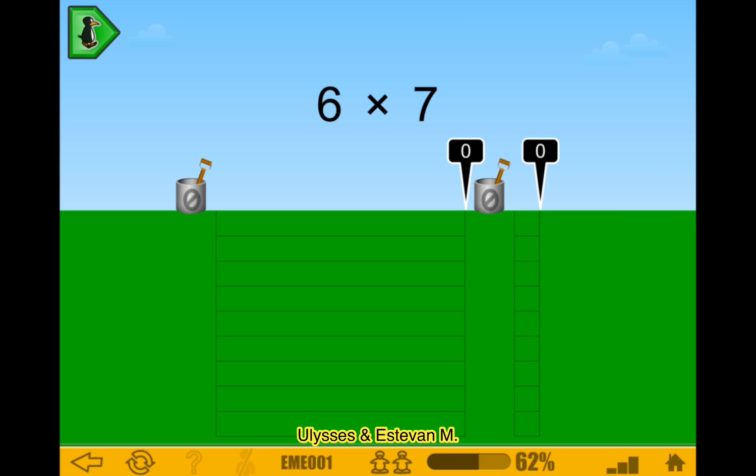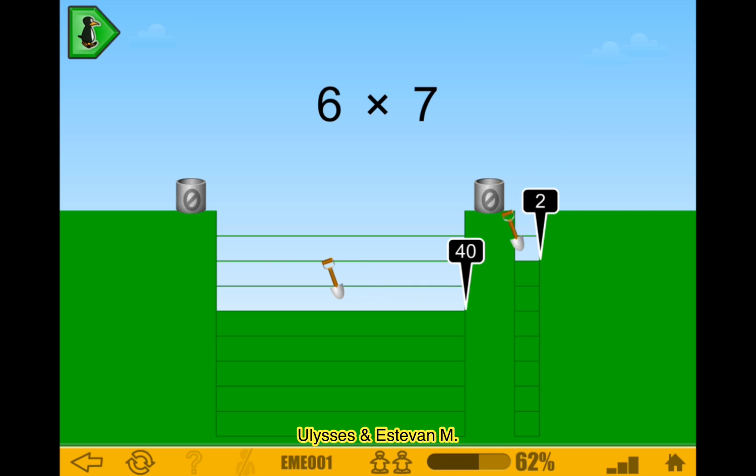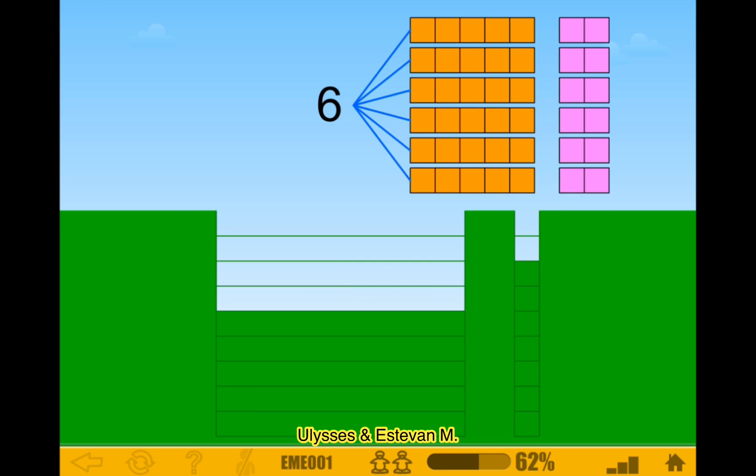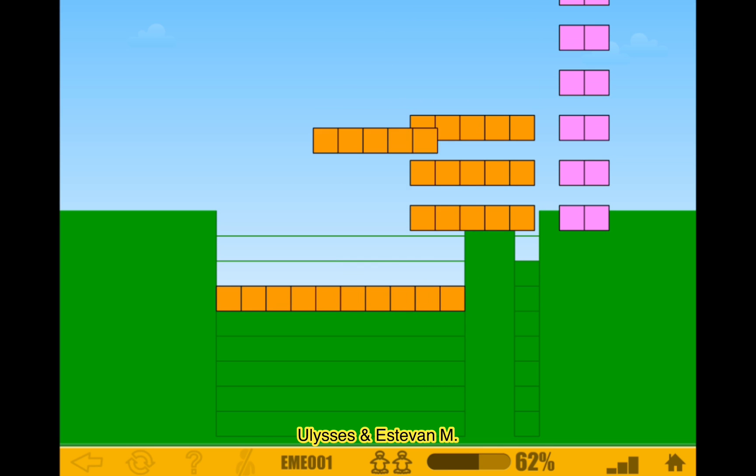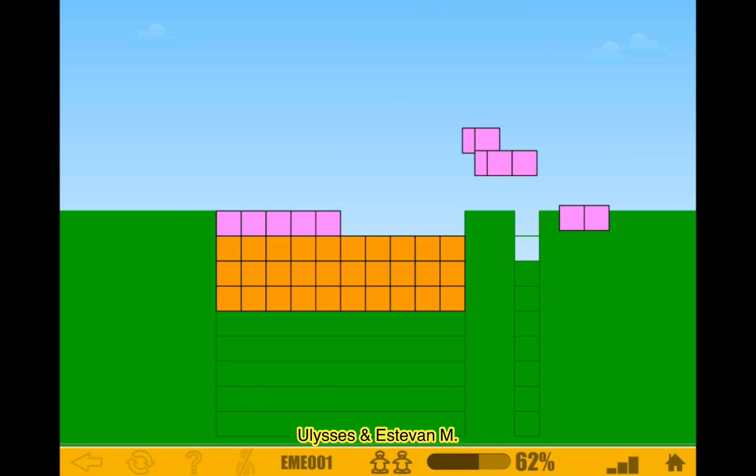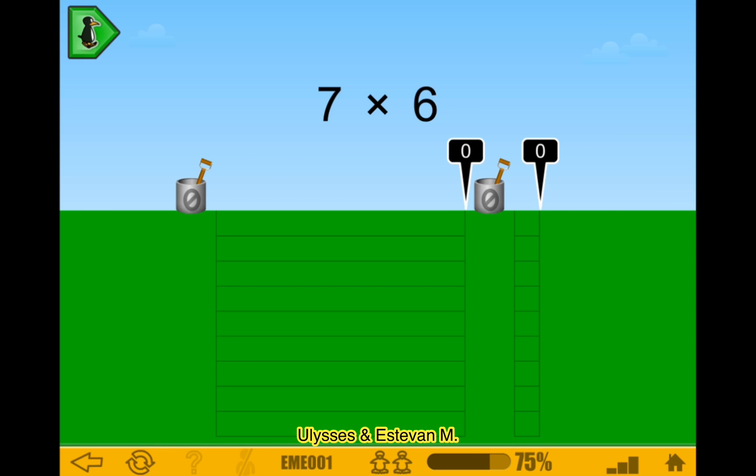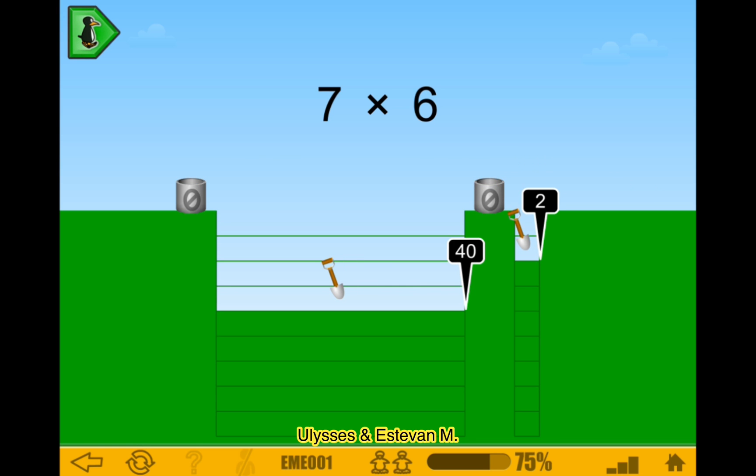6 times 7 is 42. 42, 42. Okay, so nice 2. Okay, so 6 times, oh, 7 times 6 is 42. Wait, wait, what?